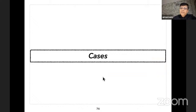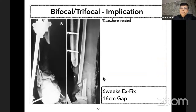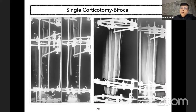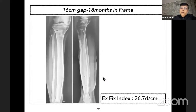This is a case from one of my colleagues: a 16 centimeter bone gap treated initially with an external fixator, then single corticotomy. The frame was kept for 18 months to treat the 16 centimeter gap. If dual corticotomy had been done, the duration in frame could have been significantly reduced.